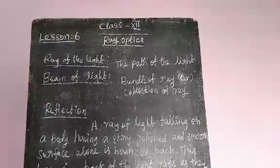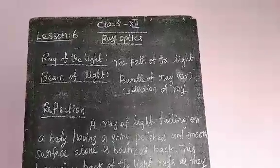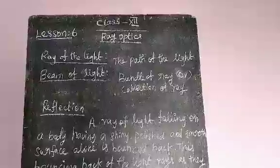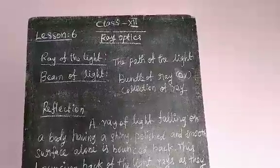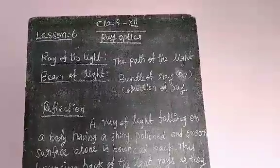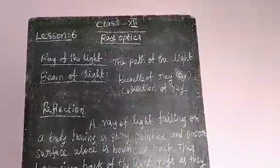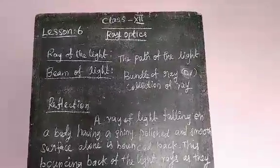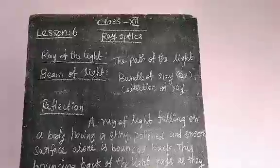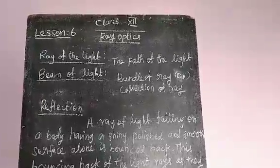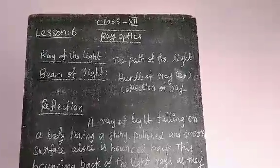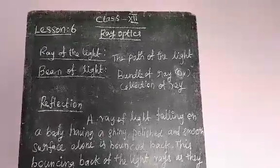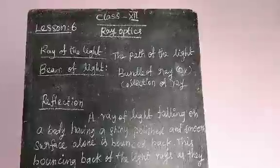What is Ray Optics? The path of the light rays is called Ray of the Light. What is Beam of Light? Bundle of rays, or collection of rays of light, is called Beam of Light.